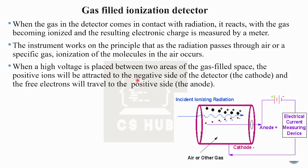When a high voltage is placed between two areas of a gas-filled space, the positive ions will be attracted to the negative side and the free electrons will travel to the positive side, causing a current flow.